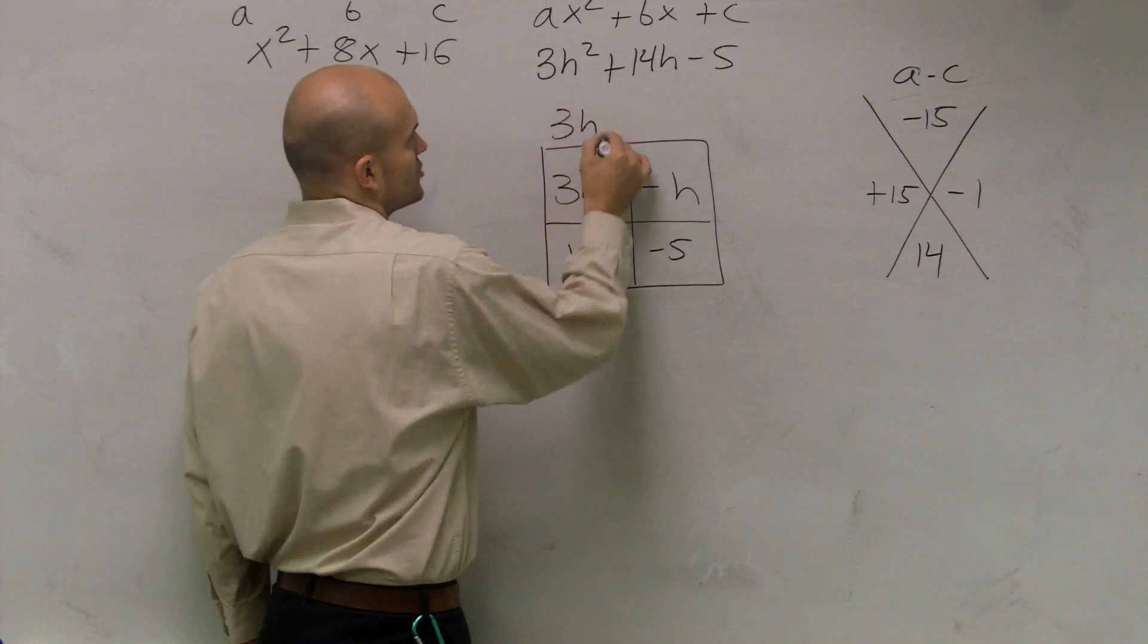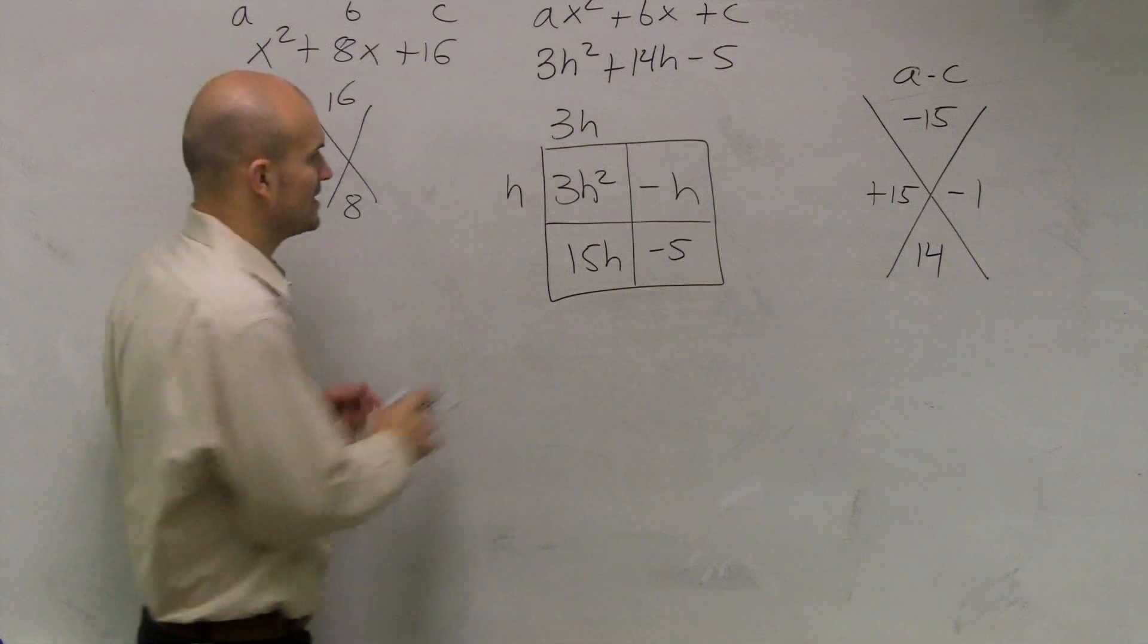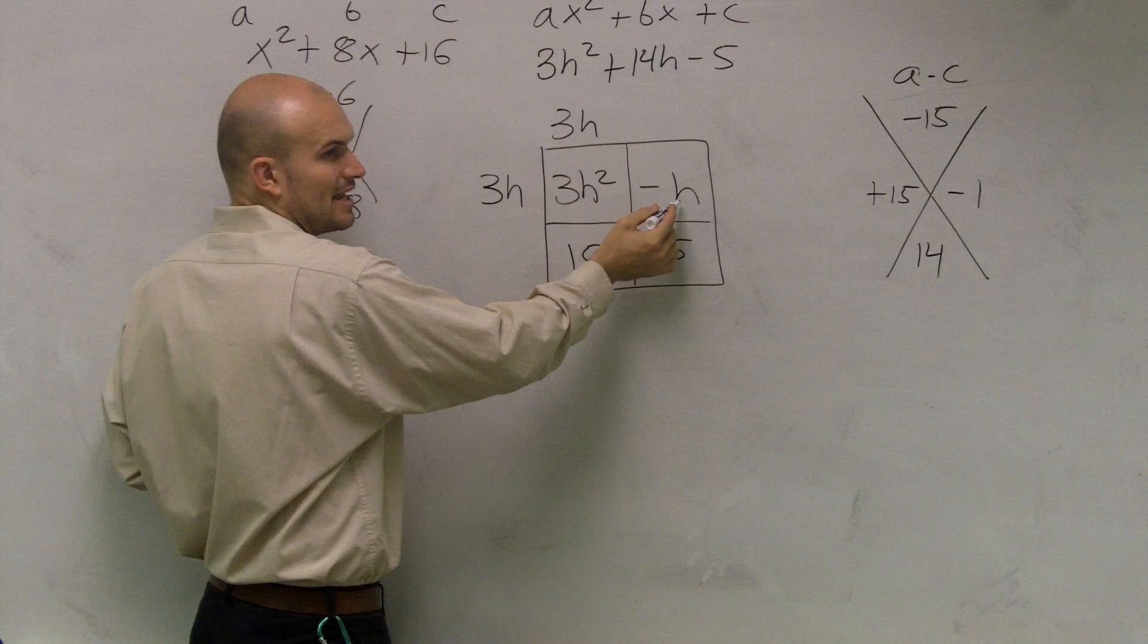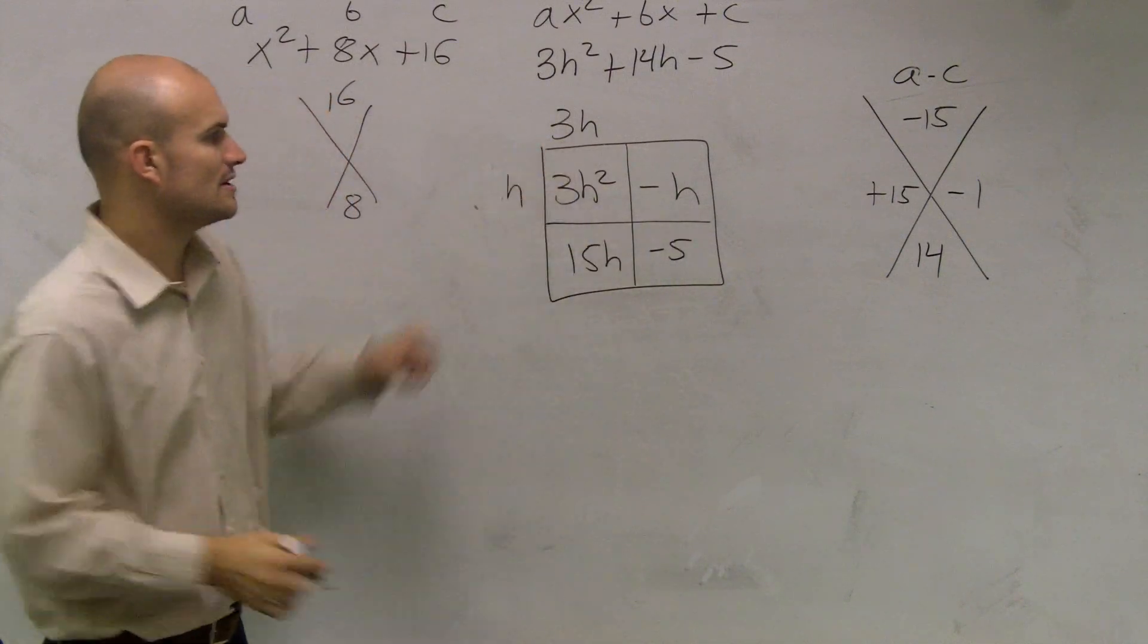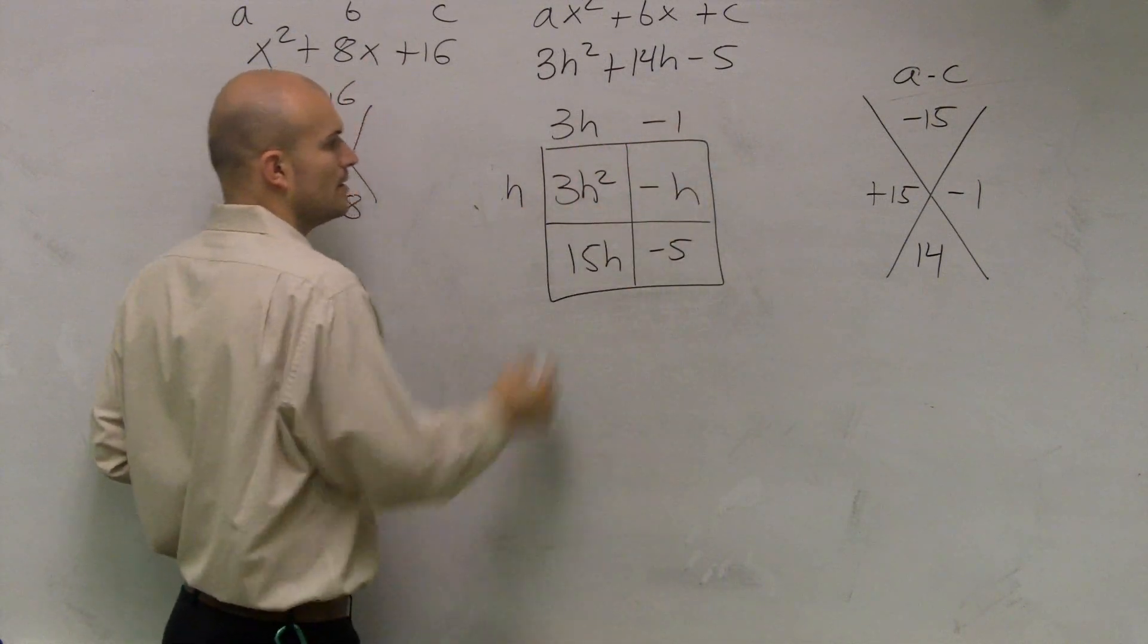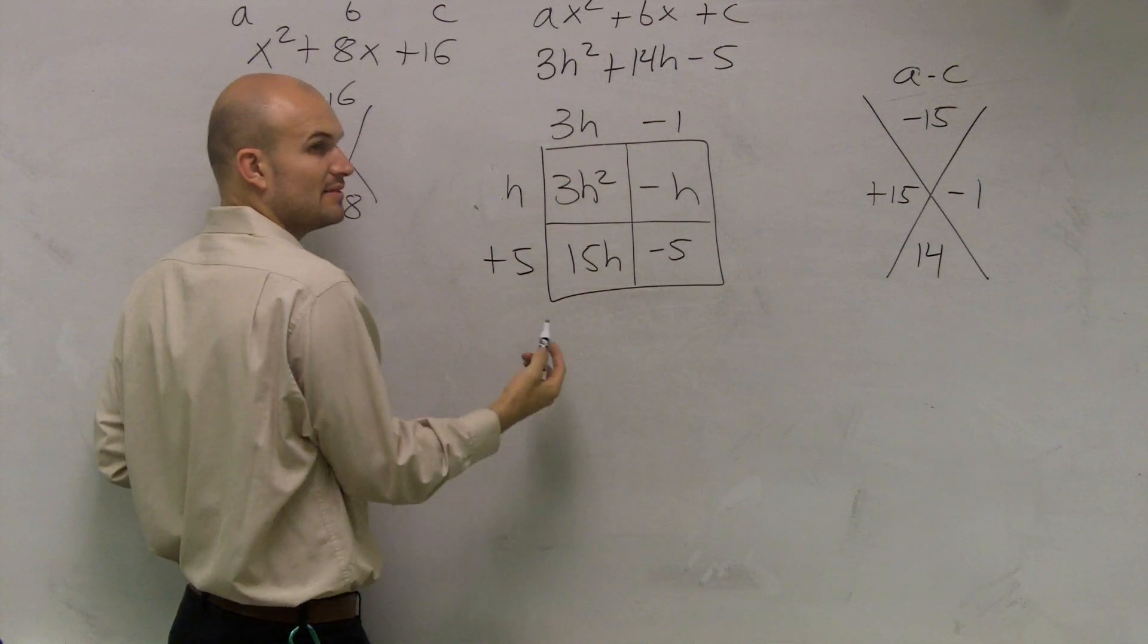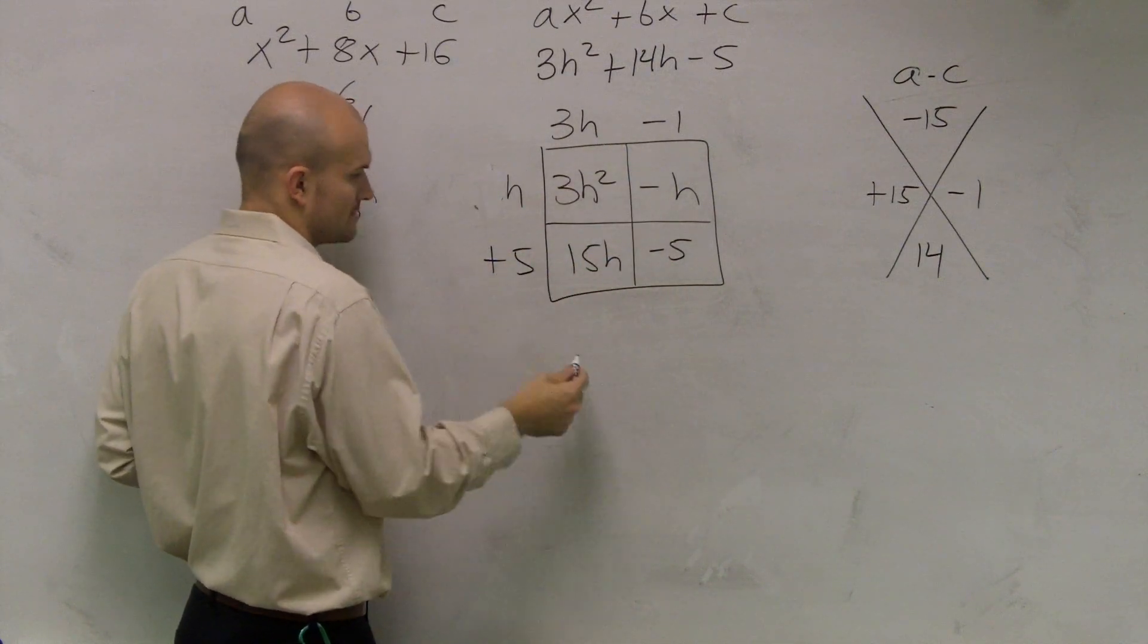The reason why I'm assuming Ethan wants to do that is because h goes into negative h. Does a 3h go into negative h? No. So I use an h. So now I can say h times 3h is 3h squared. h times negative 1 is a negative 1. 3h times what gives you 15h? Positive 5. And then let's just check our answer. Does 5 times negative 1 give you negative 5? Yes.